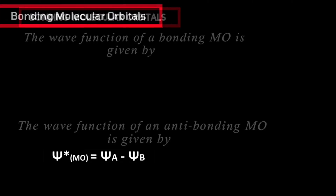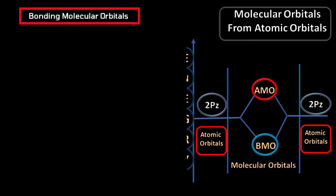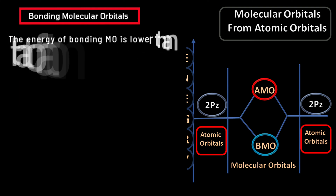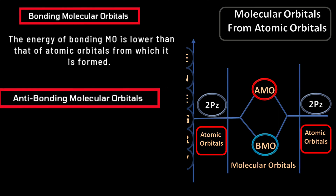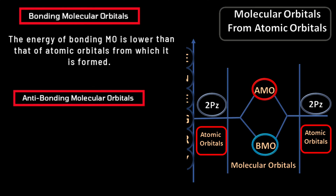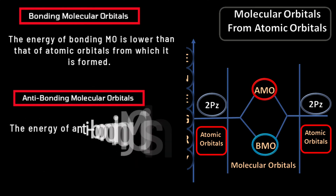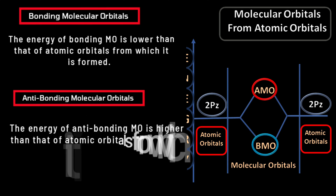Let us consider the third difference. The energy of the bonding molecular orbital is lower than that of the atomic orbital from which it is formed, while the energy of the anti-bonding molecular orbital is higher than that of the atomic orbital from which it is formed.